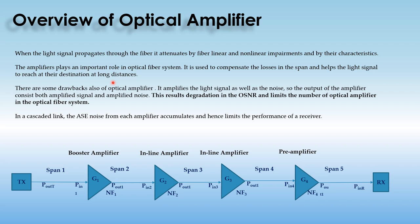Besides this usefulness of the optical amplifier, there are some drawbacks. It amplifies the light signal as well as the noise, so the output of the optical amplifier consists of both the amplified signal and the amplified noise. This results in degrading the OSNR and limits the number of optical amplifiers in the optical fiber system.